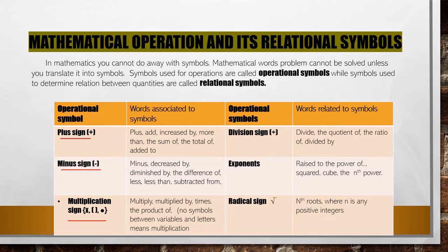If there is no symbol between variables and letters, it means multiplication — for example, xy means x times y. For division: divide, the quotient of, the ratio of, divided by. For exponent: raised to the power of, squared, cubed, to the nth power. For radical sign: nth roots, where n is any positive integer.